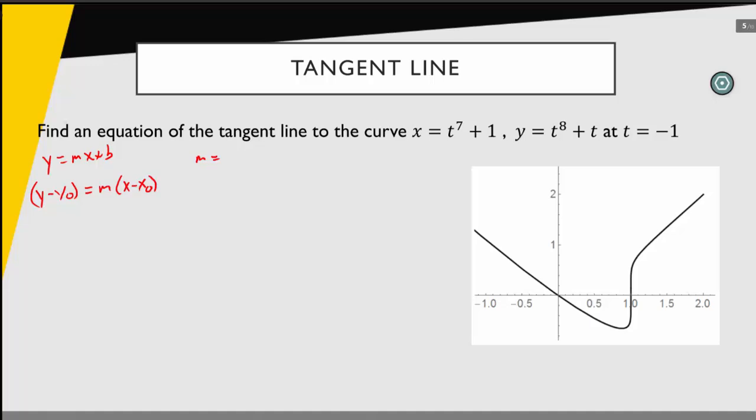And the idea is m is the slope of this line. We want our m to be the instantaneous slope of the curve, so that is the derivative dy dx evaluated at that time t equals negative 1.